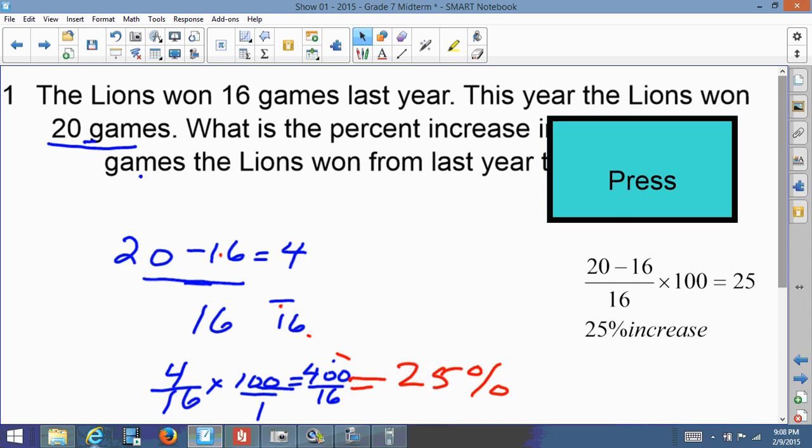That is the increase in the amount of games that they won from last year to this year. So 20 minus 16, we found the difference, and we put it over the previous year because that's the base of whatever we started from. Then we multiply by 100 because we're looking for a percentage. That's a 25 percent increase.